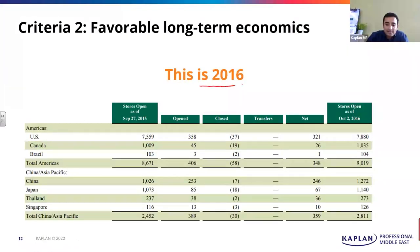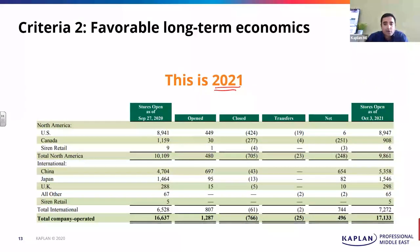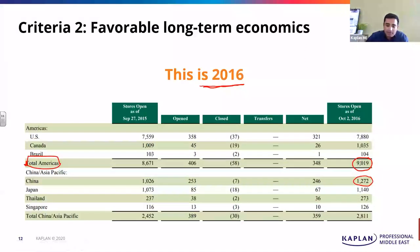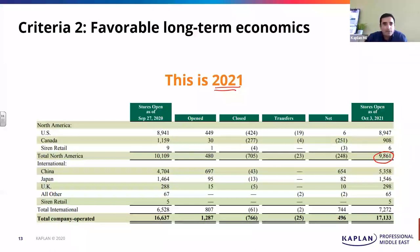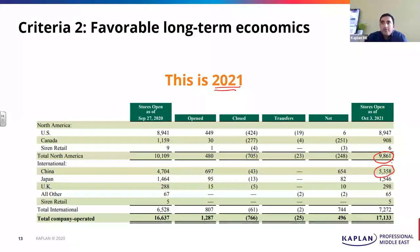This is Starbucks in 2016. In America they had 9,000 stores. In China they had 1,200 stores. Now fast forward five years to 2021 — in the US they have around 9,800 stores. So there is no massive growth in the US — from 9,000 to 9,800, maybe 10% growth in the last five years. But look at China — from 1,200 stores, today it is 5,000. Almost 4x in the last few years.